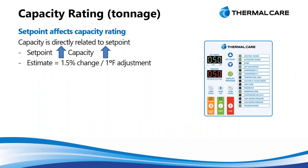I bring up the nominal rating because certain things affect the capacity of the unit, and you need to be aware of those when selecting your chiller. The first and most important is usually the first question I ask when starting to design a system: what is the temperature of the water required for the process? When you change away from that nominal 50-degree set point, you actually change the capacity of the unit. As demonstrated here using a nominal 10-ton chiller as an example, as we increase that set point, we actually gain a percentage of capacity with each degree. We can get up to almost an additional whole ton of cooling by raising the set point temperature by five degrees.